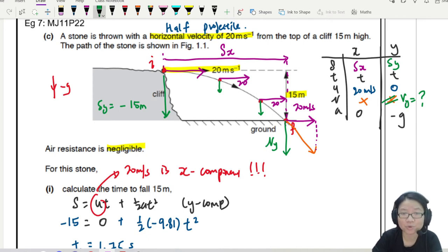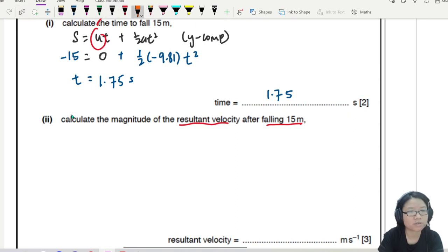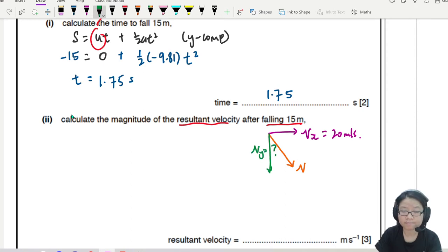So once we find VY, we can use Pythagoras theorem to bring them together so that I can get V. Here, my vector was like this. This is V. And then I have VX, which stayed as 20. And then I will have VY, which I need to find now. To find VY, since I already have T, I can use any equation that I want. So I could use V equals to U plus AT. Or if you're feeling paranoid about your T value, you can use the equation with no T.